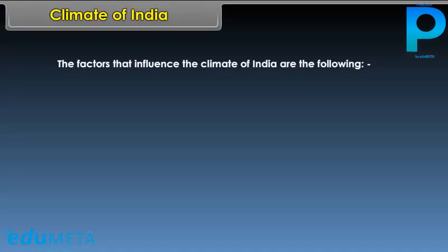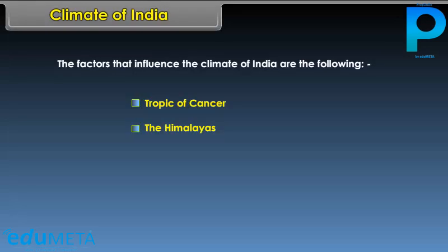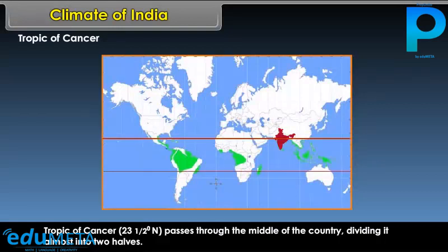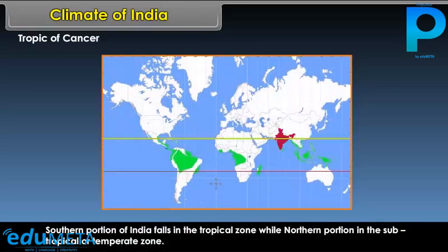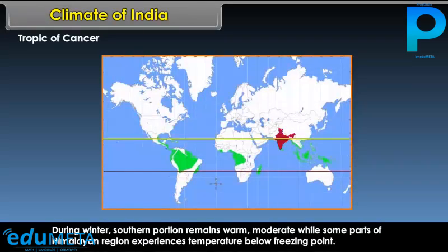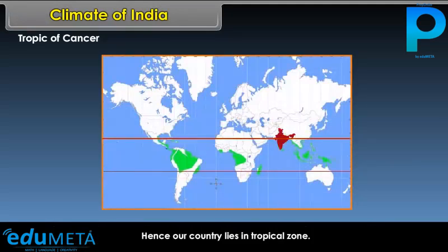The factors that influence the climate of India are: the Tropic of Cancer, the Himalayas, the peninsular shape of South India, and relief. The Tropic of Cancer passes through the middle of the country, dividing it almost into two halves. The southern portion falls in the tropical zone, while the northern portion falls in the subtropical or temperate zone. During summer, the entire country experiences high temperature; during winter, the southern portion remains warm and moderate, while some parts of the Himalayan region experience temperatures below freezing point.